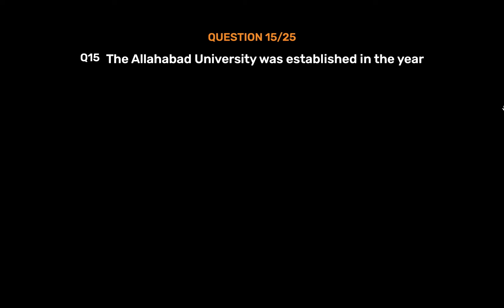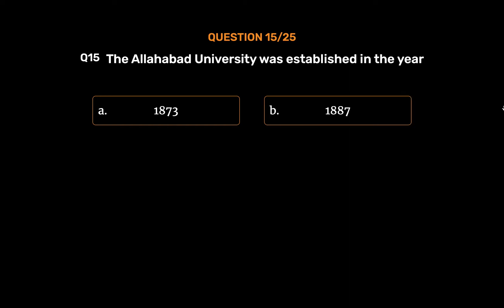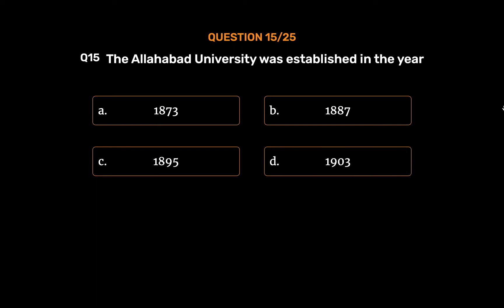Question No. 15: The Allahabad University was established in the year? Option A: 1873. Option B: 1887. Option C: 1895. Option D: 1903. The correct answer is Option B: 1887.